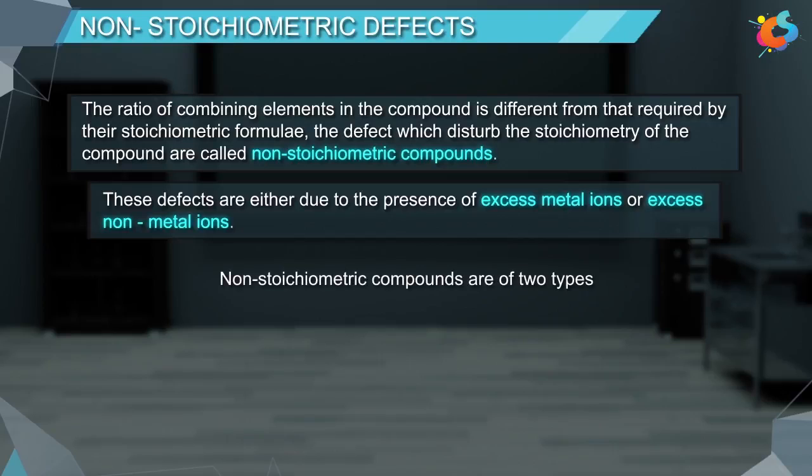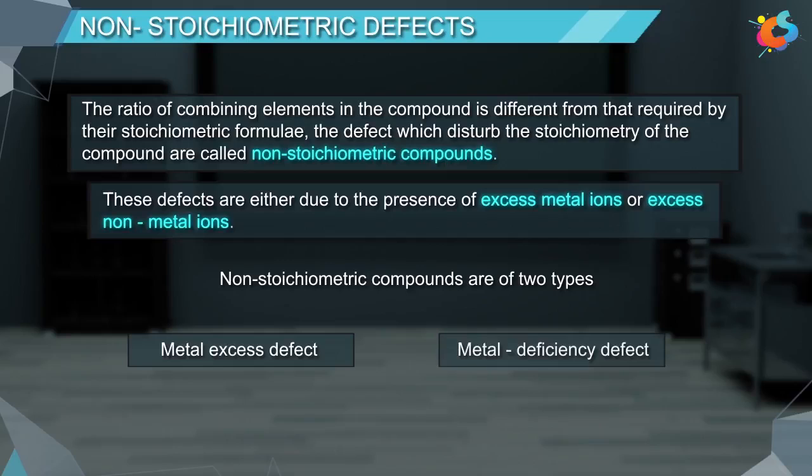Non-stoichiometric compounds are of two types: metal excess defect and metal deficiency defect.